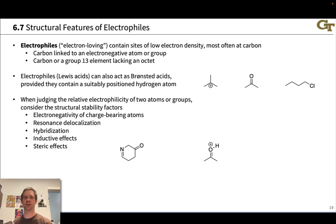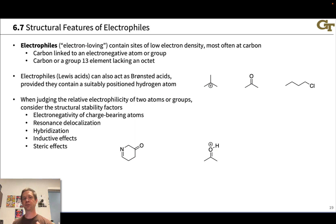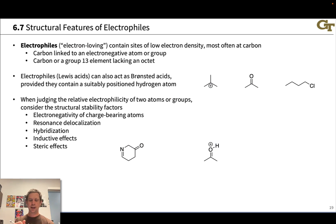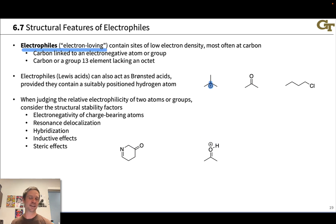Electrophiles are electron-loving species with low electron density—positive or full-blown positive charge—meaning they want to accept electrons to become neutral. Something like a carbon linked to an electronegative atom where the carbon is left partially positive, or a carbocation with positive charge on the carbon that's not satisfying the octet rule, is a classic example of an electrophile. The carbocation is a six-electron carbon that wants another pair of electrons to satisfy the octet rule, making it an awesome electrophile.